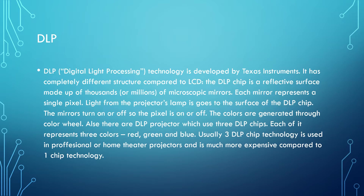What is DLP? DLP stands for digital light processing — a technology developed by Texas Instruments. It has a completely different structure compared to LCD. The DLP chip is a reflective surface made up of thousands or millions of microscopic mirrors; each mirror represents a single pixel. Light from the projector's lamp goes to the surface of the DLP chip. The mirrors turn on or off so each pixel is on or off. The colors are generated through a color wheel.